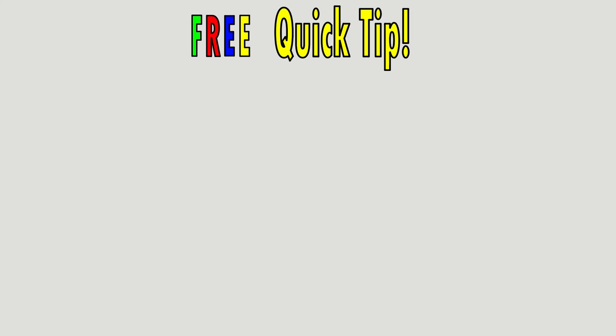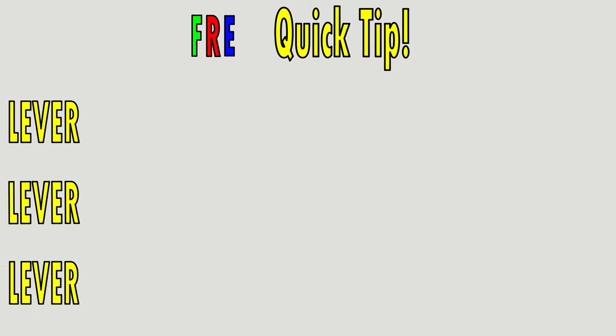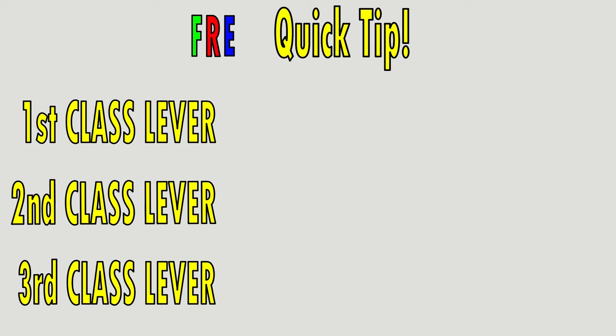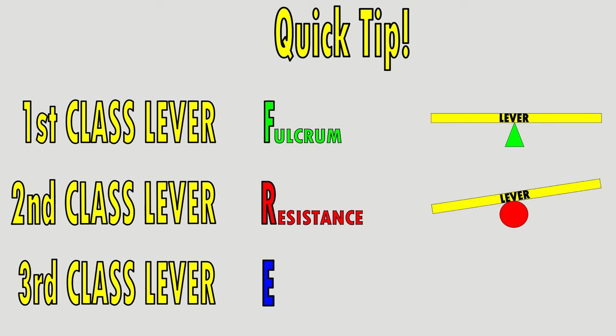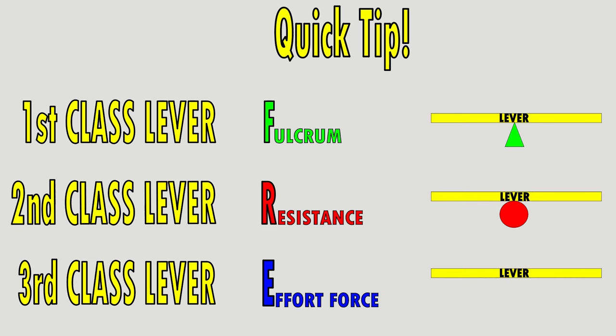Here's a quick tip for remembering which lever is which: spell out the word 'FRE' — F, R, E. The first class lever is F, with the fulcrum in the middle. The second class lever is R, with the resistance in the middle. The third class lever is E, with the effort in the middle.